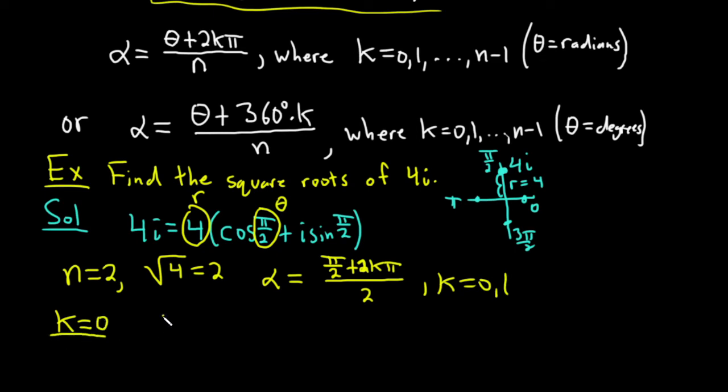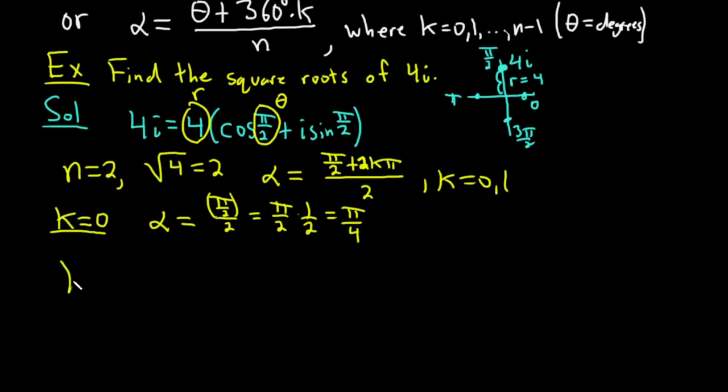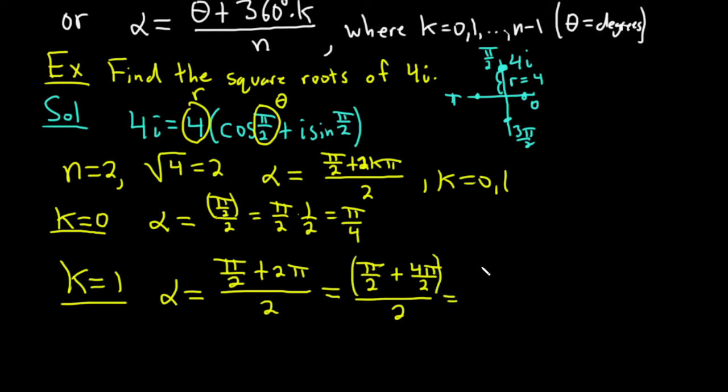So when k is 0, alpha equals, well, that's going to go away. So we'll just get pi over 2 over 2, which is really pi over 2 times 1 half, which is pi over 4. And when k equals 1, we get alpha equals pi over 2 plus 2 pi, and all of that is divided by 2. So this is pi over 2, and we're adding 2 pi to it. One way to do that would be 4 pi over 2, and that's over 2. Pi over 2 plus 4 pi over 2 is 5 pi over 2, and all of that's over 2. 5 pi over 2 divided by 2 is the same thing as 5 pi over 2 times 1 half. That's 5 pi over 4. So those are our two angles: pi over 4 and 5 pi over 4.